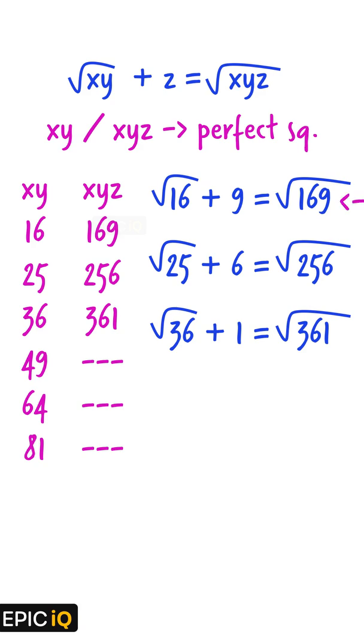Now, only the first equation, 4 plus 9 equal to 13, is valid. So, x will be 1, y will be 6, and z will be 9.